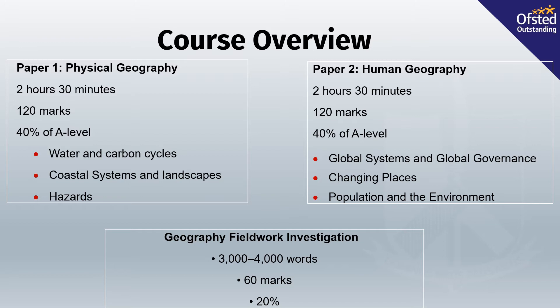Whilst this is a physical paper, there are a huge amount of human elements within it. For example, in water and carbon cycles you study the Amazon rainforest, including the impact of carbon and the management of the Amazon rainforest. You also study interesting contrasting case studies around the world. For coastal landscapes, you will study Bangladesh, covering coastal management, sea level rise, and the effects of climate change.